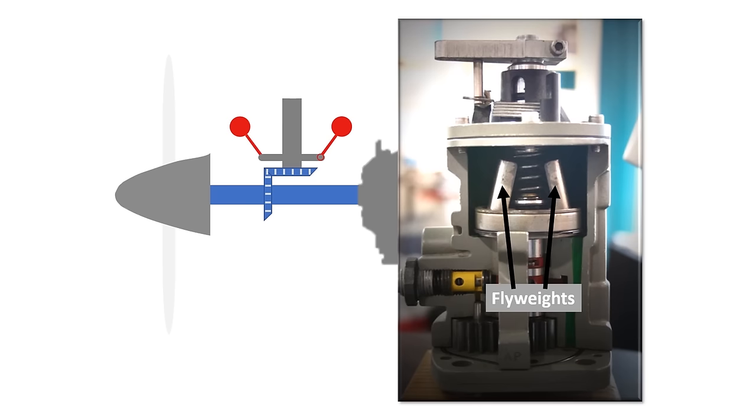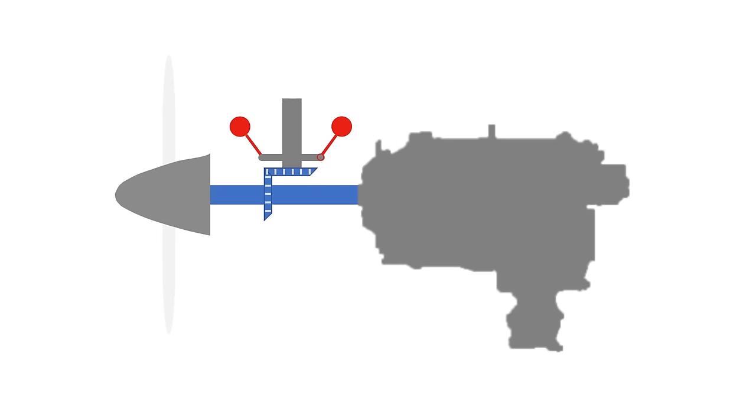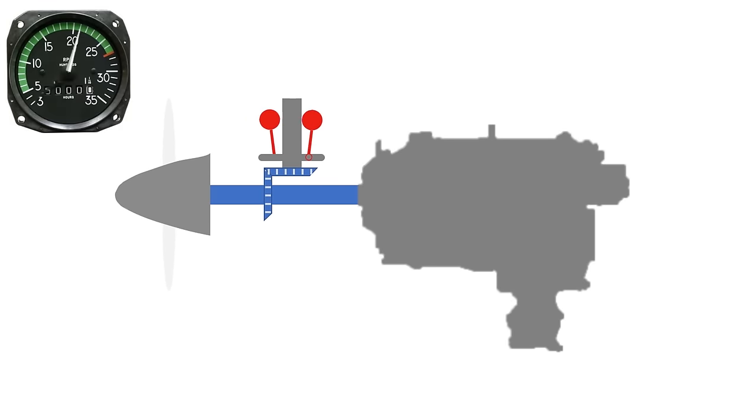So the flyweights respond to changes in the propeller RPM. At lower RPM, the weights fall inwards towards the governor. So at say 2100 RPM, the weights may look like this. As the propeller speeds up, the flyweights spin faster, causing the weights on the end to swing outwards. So at 2500 RPM, they may look like this.